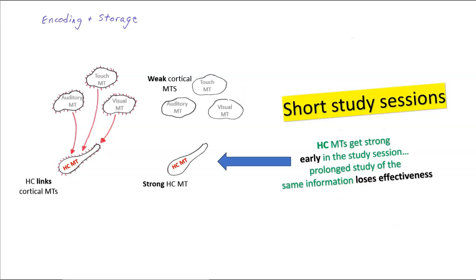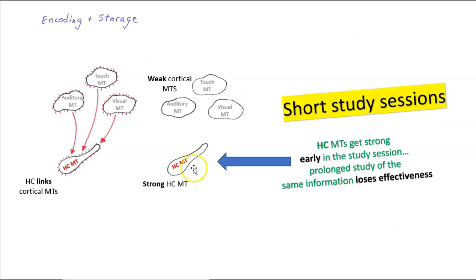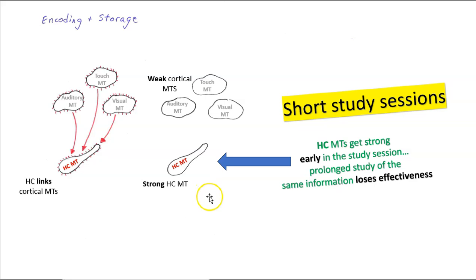On the flip side, if we consider the hippocampus, it has high plasticity neurons. But that means we have an interesting recommendation: we want to use short study sessions. The hippocampal memory traces get strong early in the study session, so prolonged study of the same information loses effectiveness. Lots of students don't know about this — when you're studying the same information for two or three hours, you're likely wasting a lot of your time, because the hippocampal memory traces have already been strengthened early in the study session. So we want to use short study sessions.